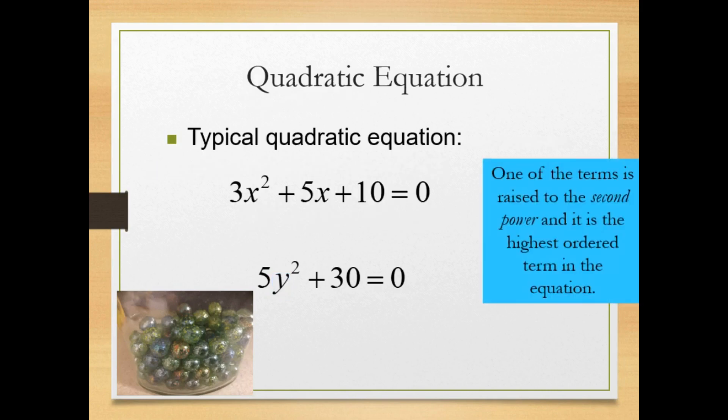The second equation has only the variable y. Another condition of a quadratic equation is that one of the terms is raised to the second power, and it is the highest ordered term in the equation. In this first example, we see x squared, and in the second, we see y squared.